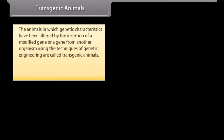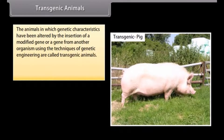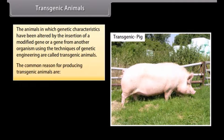Transgenic animals are animals in which genetic characteristics have been altered by the insertion of a modified gene or a gene from another organism using the techniques of genetic engineering. The common reasons for producing transgenic animals are varied.